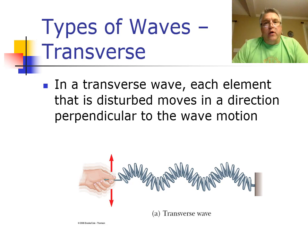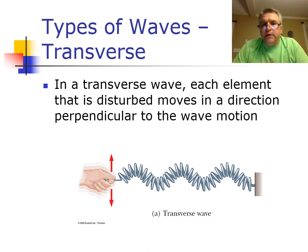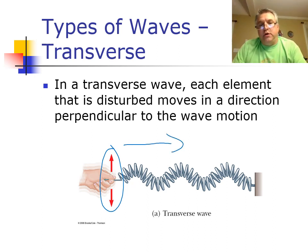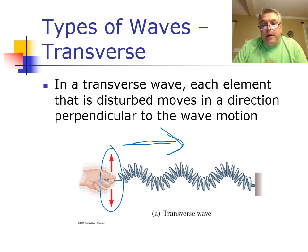There are two types of waves. The first is called a transverse wave, where the medium moves perpendicular to the direction of the wave. A wave in the ocean or flicking a rope is a good example. The medium moves up and down in the vertical direction, yet the wave travels in the horizontal direction. So the disturbance of the medium is perpendicular to the direction of travel.